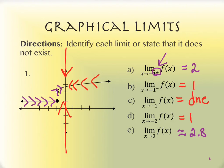Why does limit C not exist? From the right-hand side we're approaching a y value of 2, and from the left-hand side we're approaching a y value of 1. They don't arrive at the same location — one gets close to 2, the other gets close to 1. For a limit, we're supposed to be getting close to the same y value, and we weren't doing that between the left-hand side and the right-hand side of negative 1. That jump in the graph at that location is the causing problem.